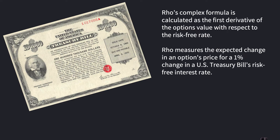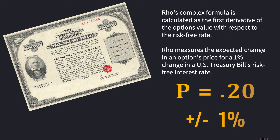You might be asking, what is the risk-free rate? Well, Rho measures the expected change of an option's price for a 1% change in a U.S. Treasury bill's risk-free interest rate. So if you've got a Rho of 0.20 on the option and the interest rate changes up or down 1%, that option premium is going to change 20 cents per share. For one contract, the premium would change about 20 dollars.